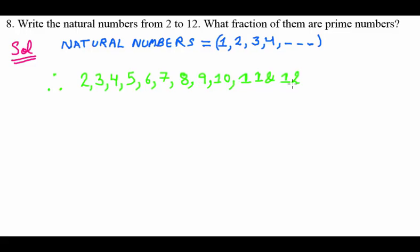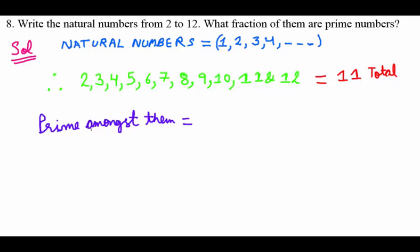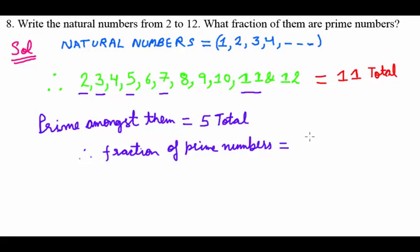The natural numbers from 2 to 12 are total 11 in number. Prime numbers amongst them: 2 is the smallest prime, 3 is also prime, 4 is not because divisible by 2, 5 is prime, 6 is not, 7 is prime, 11 is also prime. Prime numbers are divisible by 1 and themselves only. Total 5 prime numbers, so fraction of prime numbers is 5 over 11.